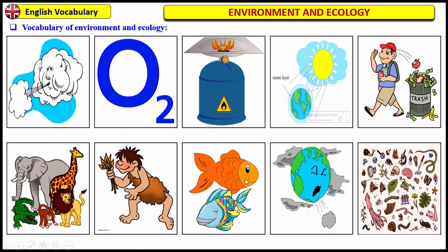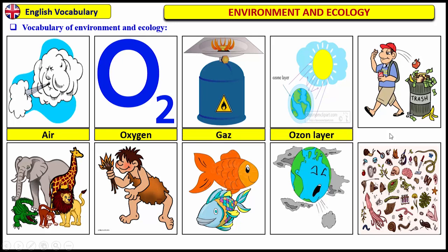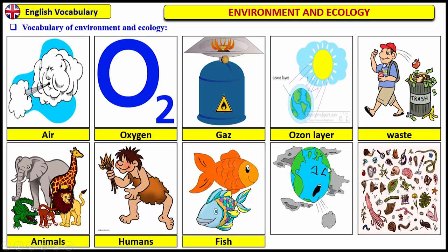Now, can you read the pictures without looking at the words? Pause the video and try. The first one is air, then oxygen, gas, ozone layer, waste, animals, humans, fish, pollution, living organism.